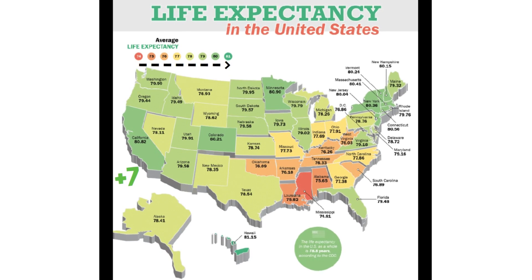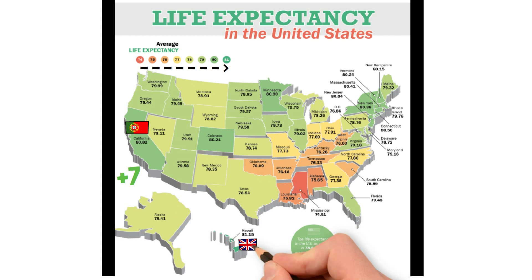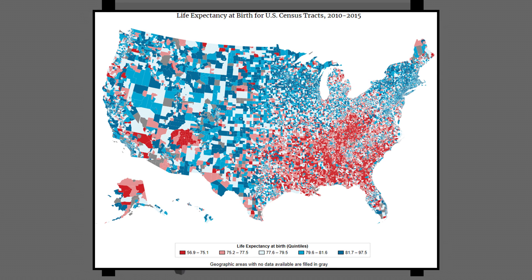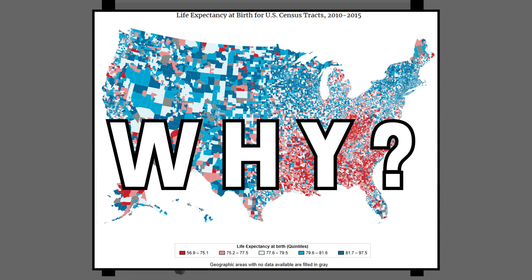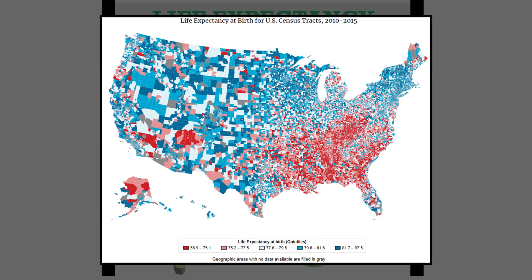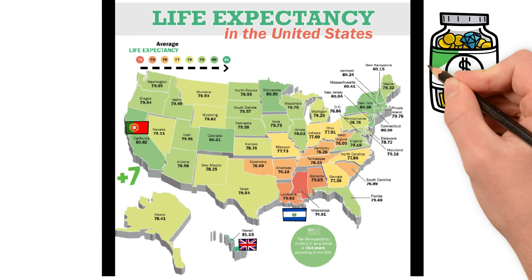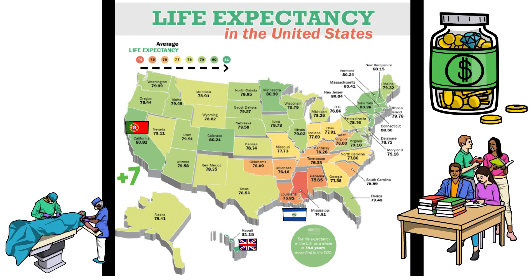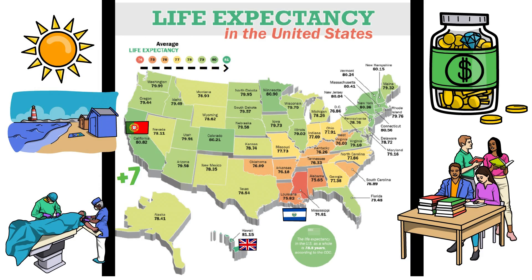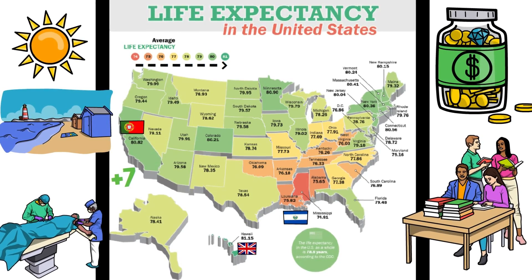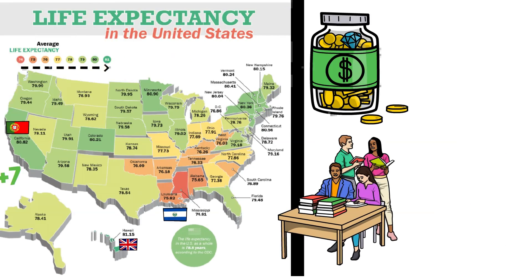A state like California or Hawaii has an equivalent life expectancy to countries like Portugal or the United Kingdom, while Alabama or Louisiana match El Salvador or Libya. The lowest states are all concentrated in the east or southeast region. As for why some states have higher life expectancy than others, almost every factor you can think of plays a role: socioeconomic status, availability of healthcare, education, and lifestyle. Who knows — maybe Hawaiians live longer because they enjoy more sun and beach time.